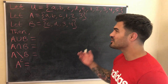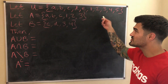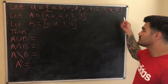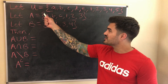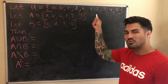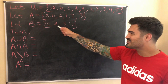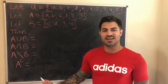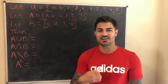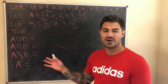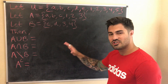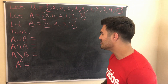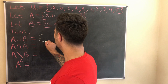The universal set is defined as {a, b, c, d, e, 1, 2, 3, 4, 5} — the first five letters of the alphabet and the first five positive integers. Set A is {a, b, c, 1, 2, 3} and set B is {c, d, 3, 4}. We want to find A union B, A intersect B, A minus B, and the complement of A. Pause the video and try it yourself before checking the answers.